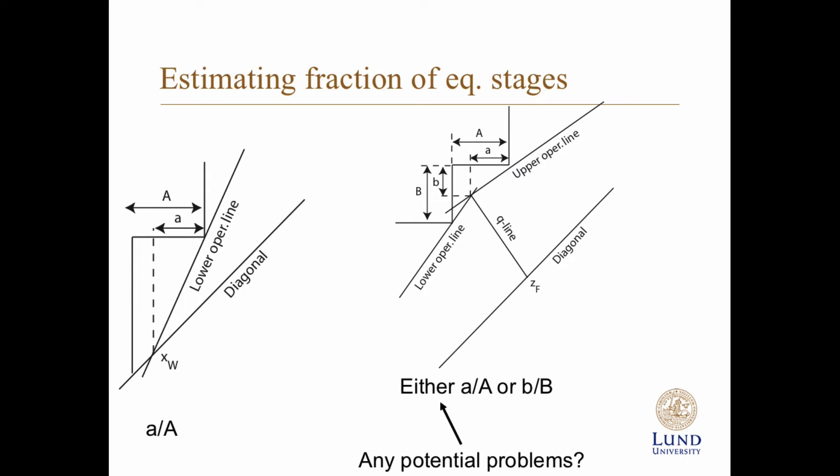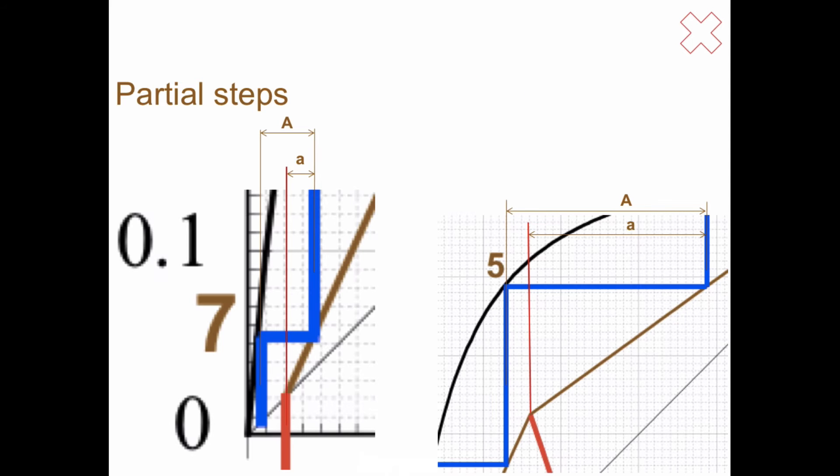But there is of course a potential problem here because you don't get exactly the same values. There are books about distillation that actually calculate it both ways and that take an average of the two. But in our course, we just stop with taking a divided by a, and that's fine.